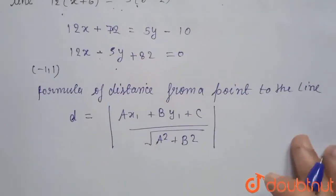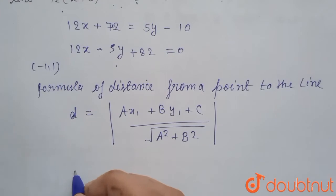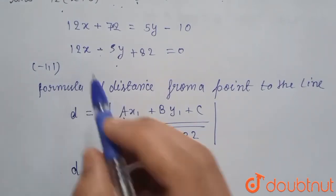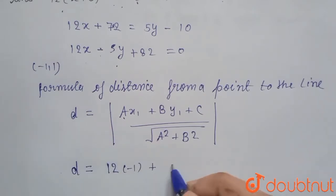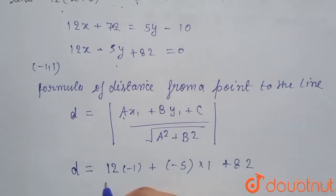So here putting the value, we get d equals to: here A is 12, x₁ is -1, plus B is -5 and y₁ is 1, plus C is 82, upon